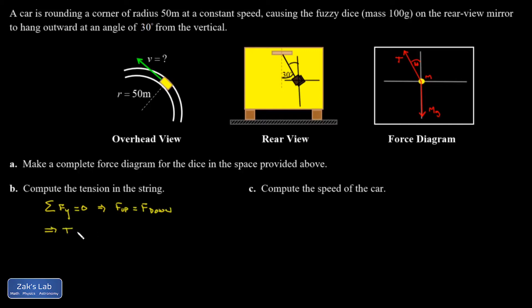And then I can plug in and say, okay, my upward force is T cosine 30. My downward force on the fuzzy dice is mg.